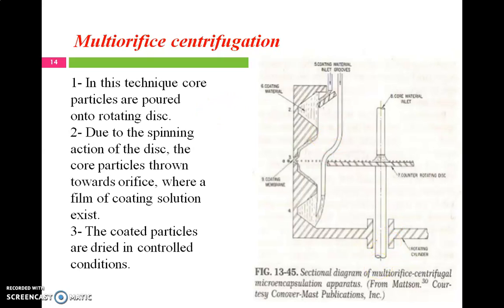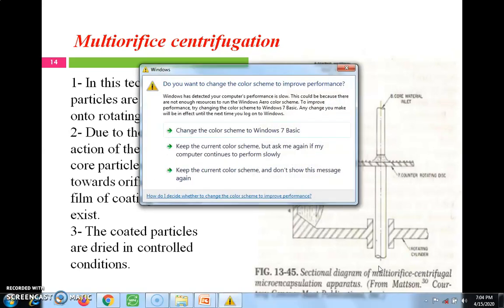Core particles are poured onto the rotating disc, and due to the spinning action and centrifugal force, the core particles are thrown towards the orifice where a film of coating solution already exists. The coated particles are then dried in controlled conditions — high temperature and low humidity — so the solvent evaporates and the core material becomes coated with the polymer, yielding microcapsules.